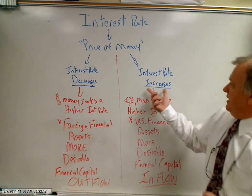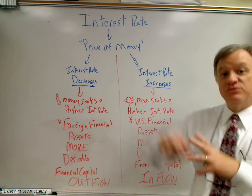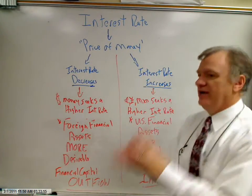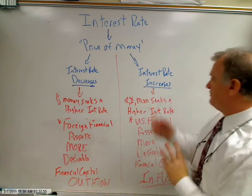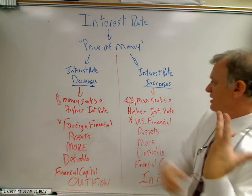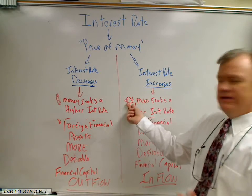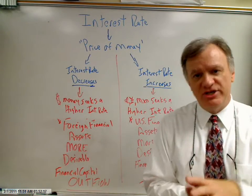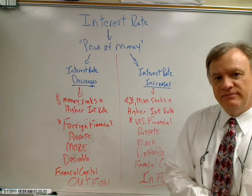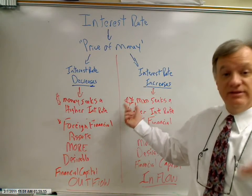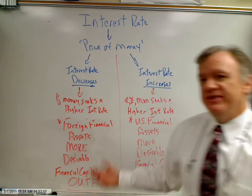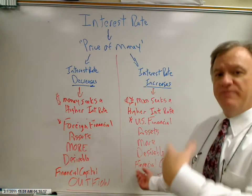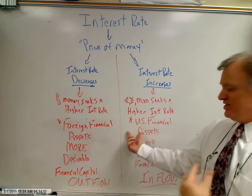On the other side, let's assume that the interest rate in the U.S. increases relative to interest rates in Europe. The Europeans are going to behave in the same way — individuals, businesses, and governments are going to take their surplus savings and put it where it'll settle and grow the largest, seeking the highest rate of return. Whether that's euros, the yen, or pesos, they're going to seek a higher rate of return. In this case, interest rates in the U.S. are higher, so U.S. financial assets become more desirable. The supply of their currencies — the euros, the yen, the pesos — is going to increase as it leaves their shores, and the demand for the dollar is going to increase. We're going to experience a financial capital inflow, an increase in the demand for the dollar, when U.S. interest rates increase, causing U.S. financial assets to become more desirable.